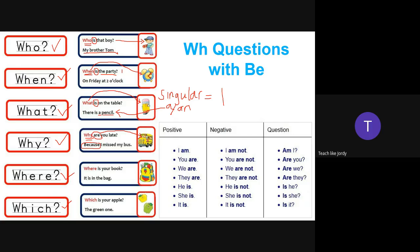For 'where': 'Where is your book?' We use 'is' because there is only one book. 'Where is your book? It is in the bag.' It is asking about place — dimana. For 'which': 'Which is your apple?' We use 'is' because you choose one from two options. 'Which is your apple — the green one or the yellow one?' There is only one answer.